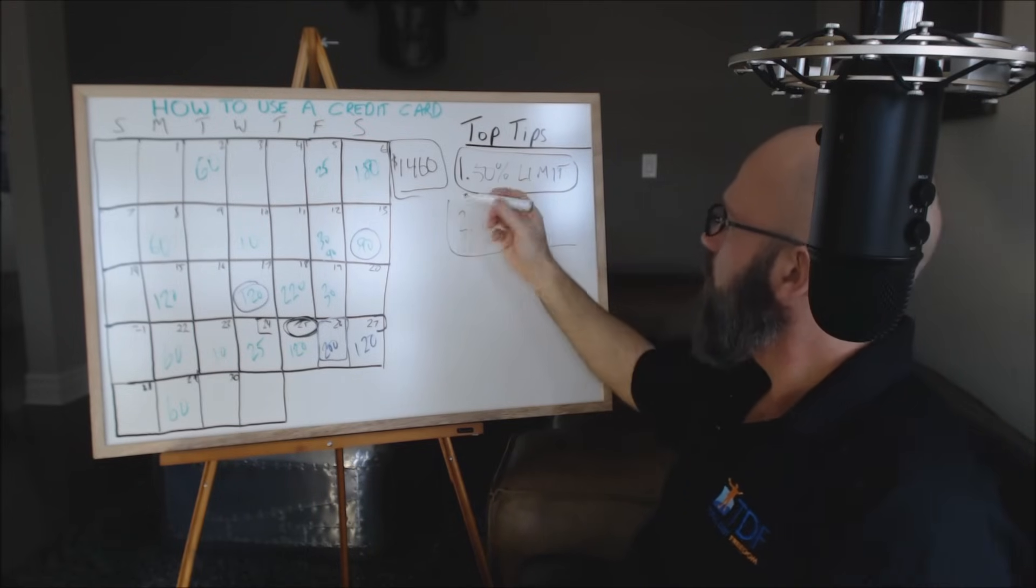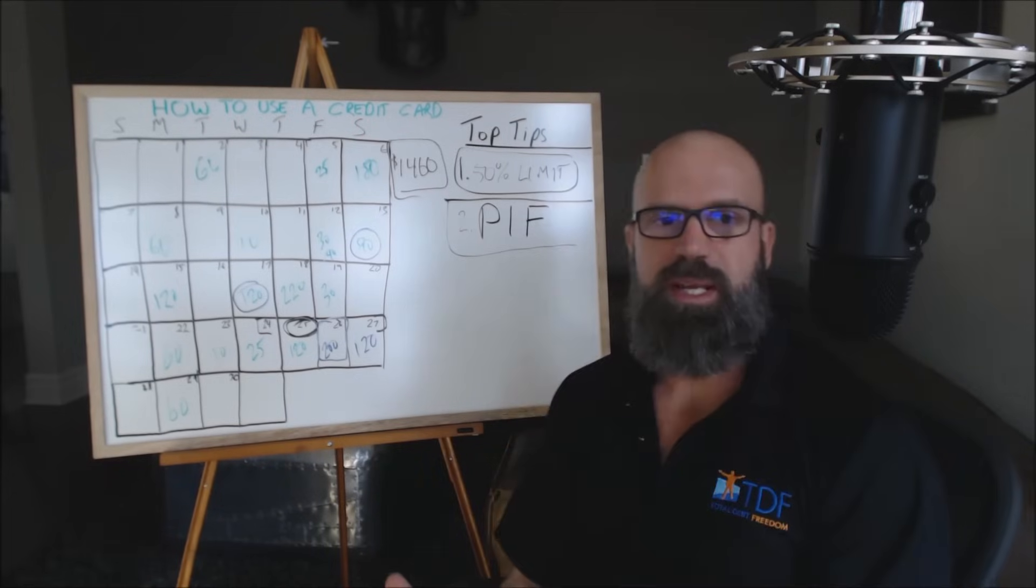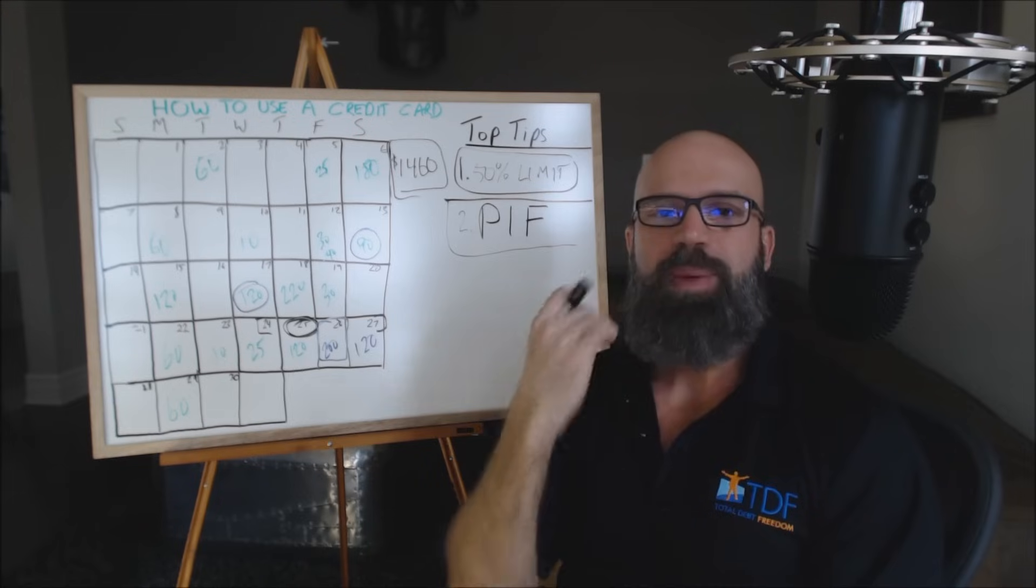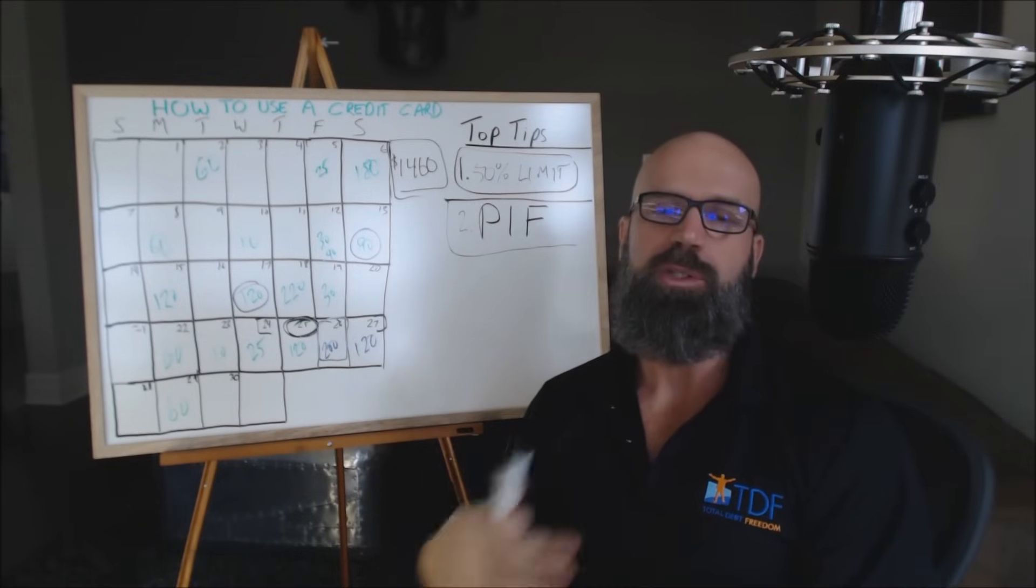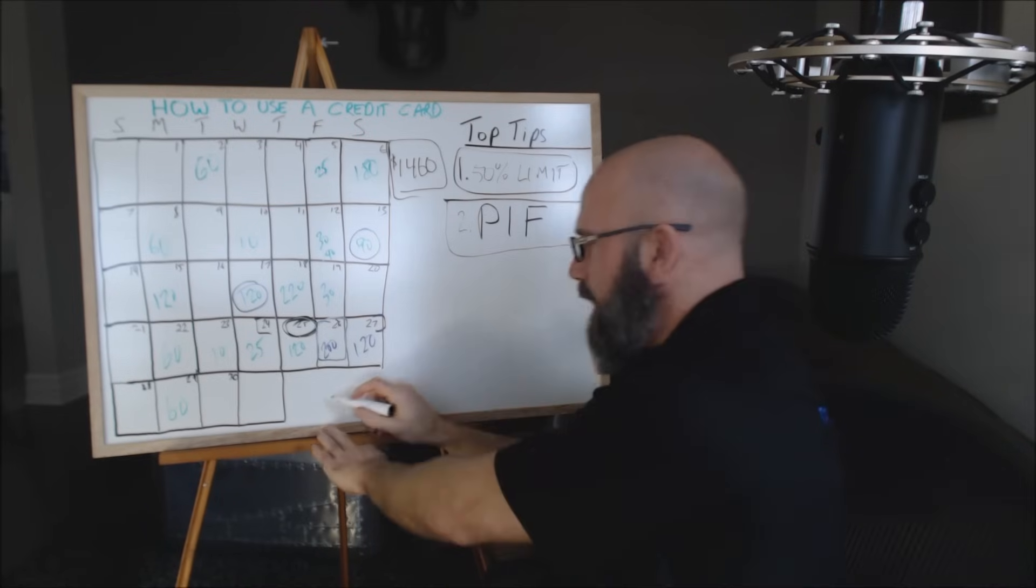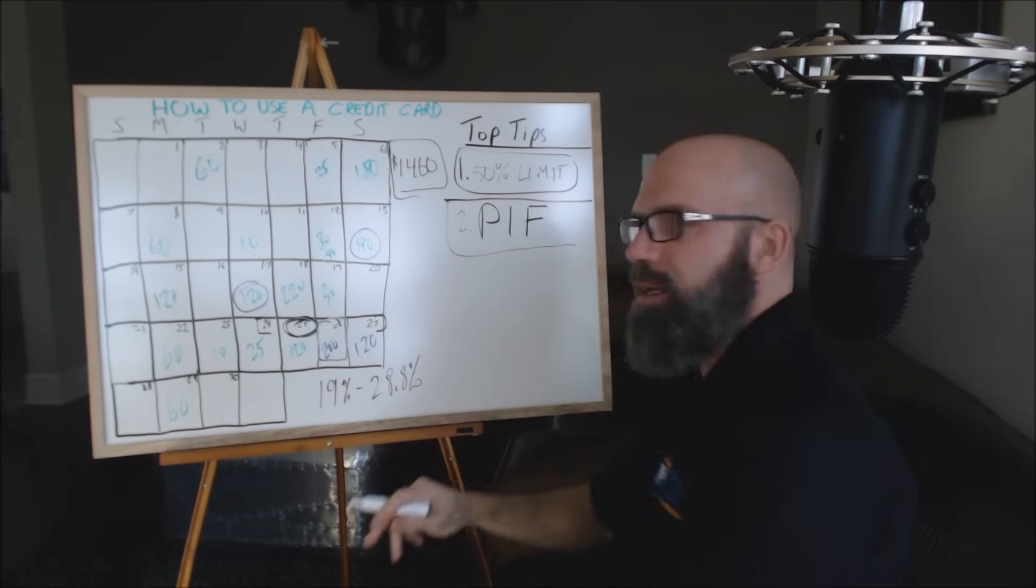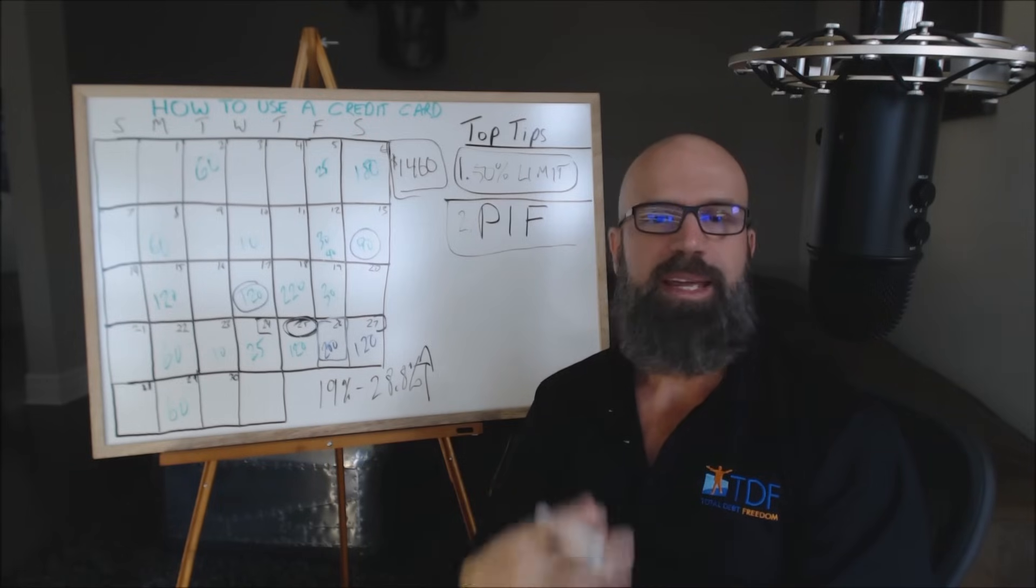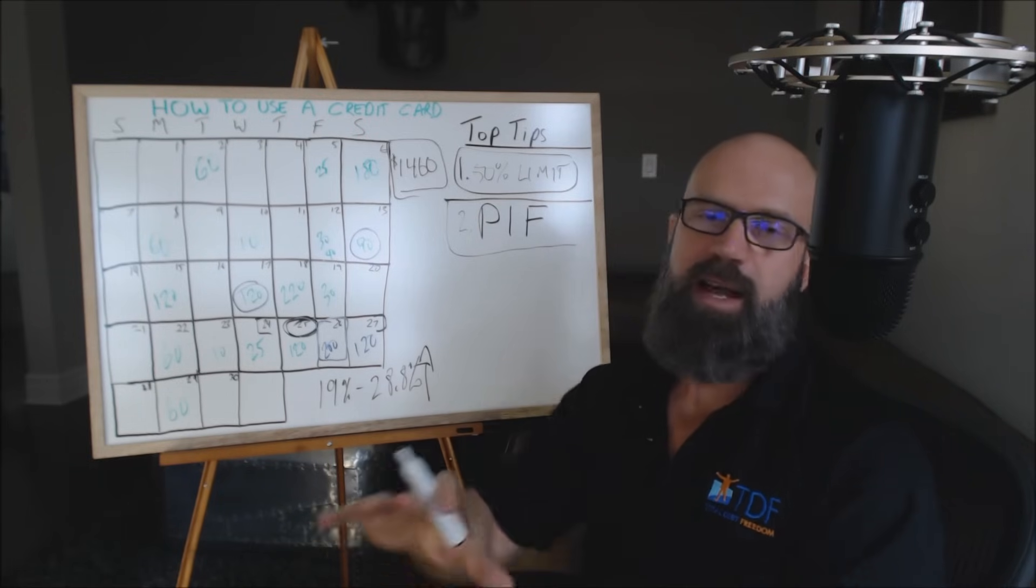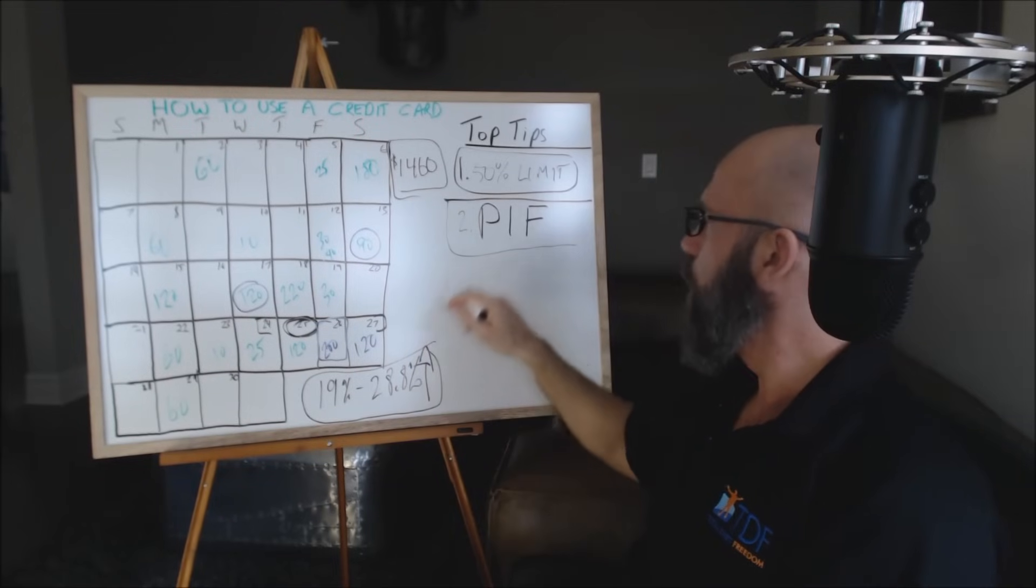Number two, I'm going to use an acronym here: PIF. And what PIF stands for in the credit collection industry is pay in full. When you get your bill and it's due on that date, you pay it in full. You do not carry a balance. If you carry a balance, you're going to be paying anywhere from 19% to 28.8%, and in some cases it goes up. Credit card companies can unilaterally decide to increase your interest rate if they don't like your payment habits or the fact that you might be carrying greater balances on your credit cards. So never carry a balance. Always PIF, pay in full.